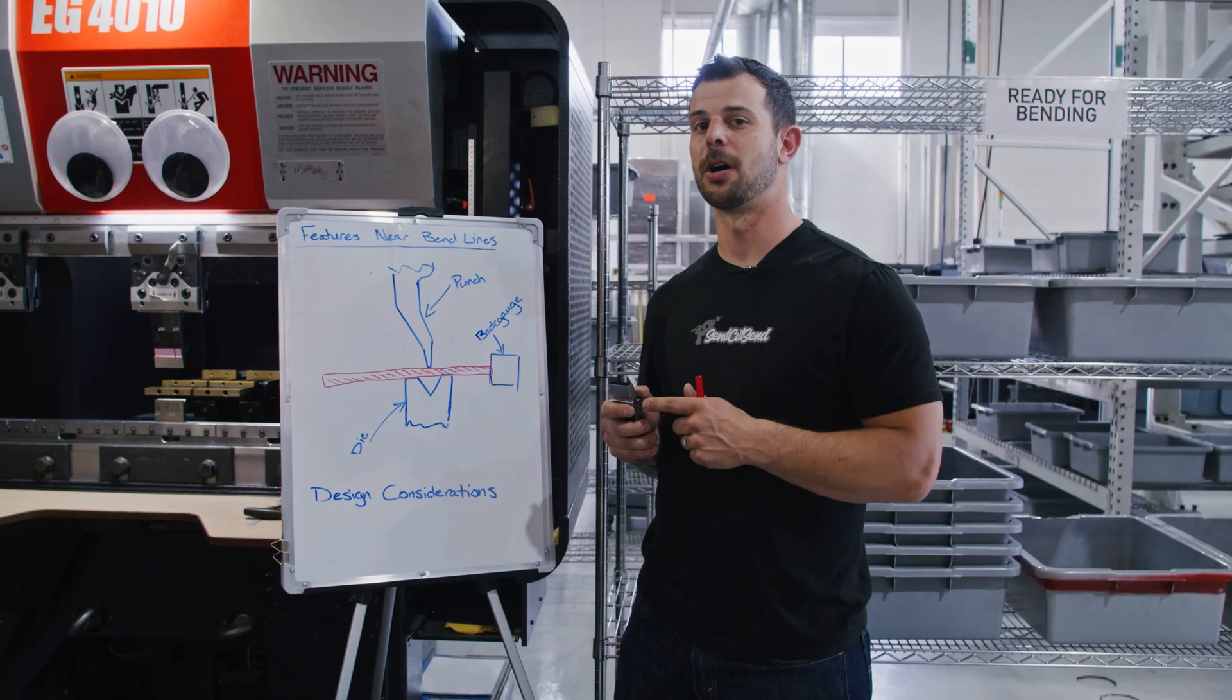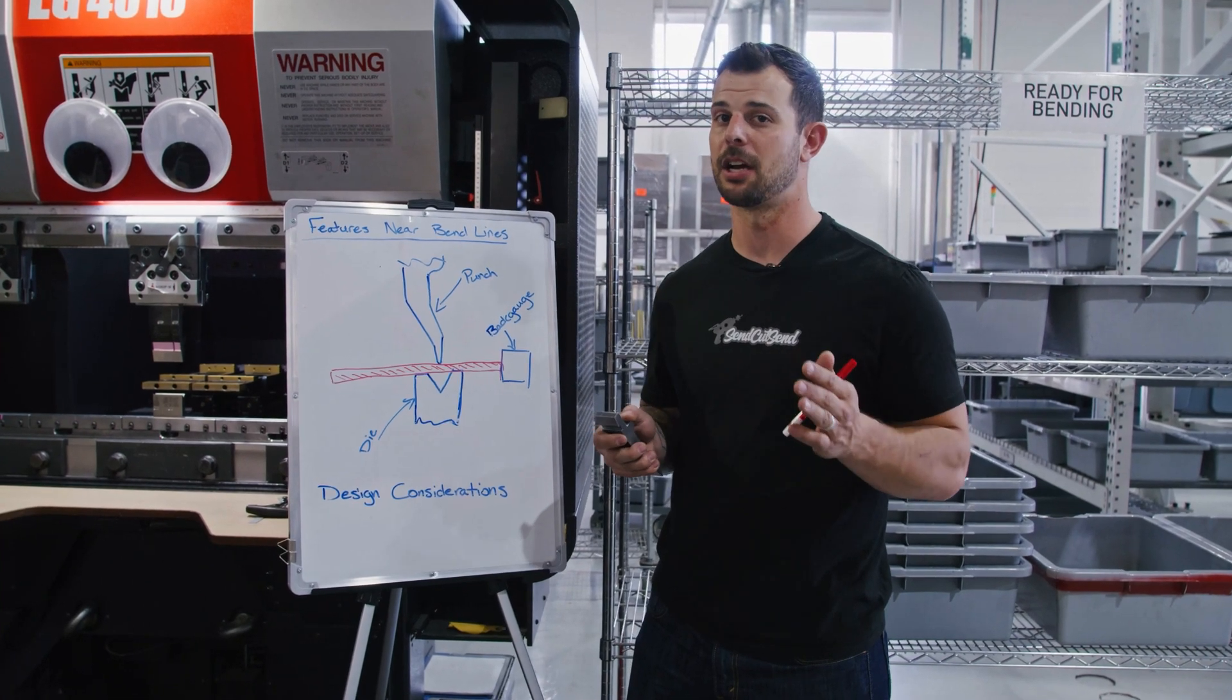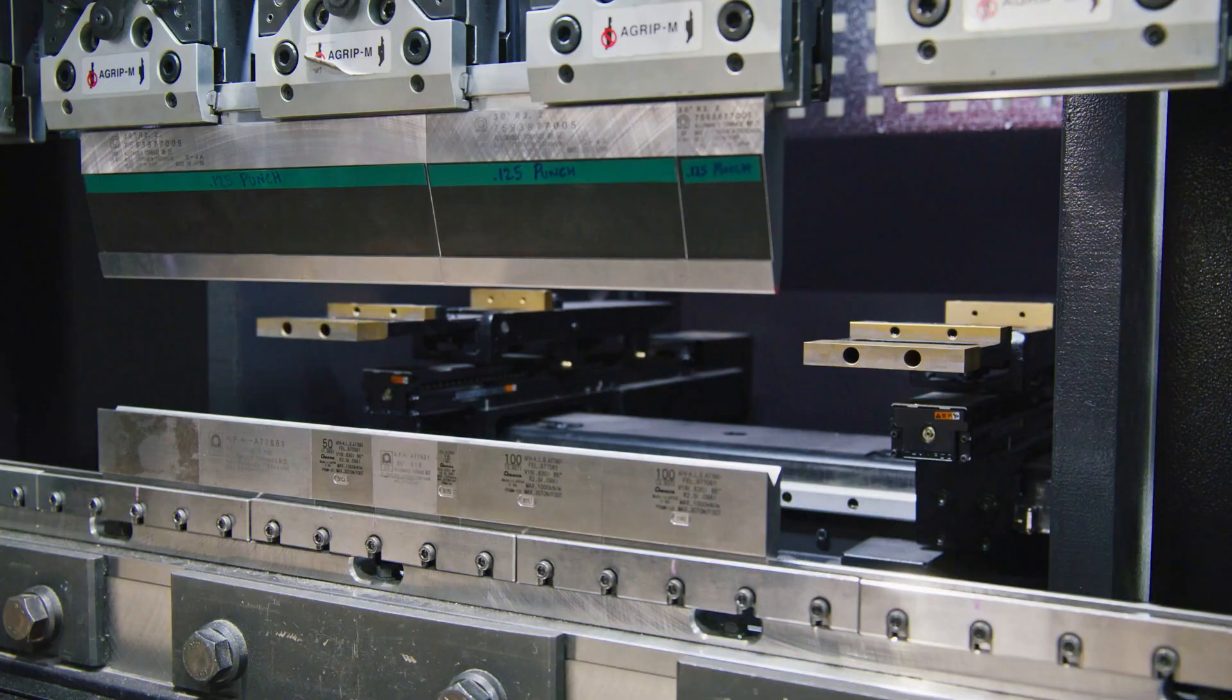So let's start by talking about a couple components that are in the CNC brake to better understand the situation. First of all, we have three main components.